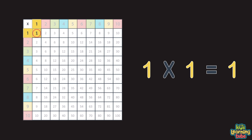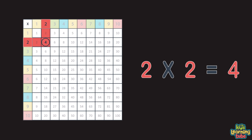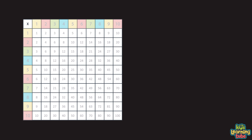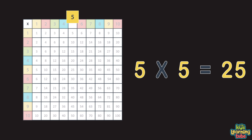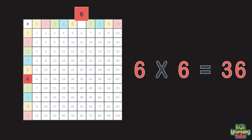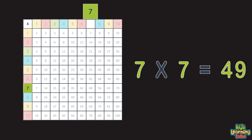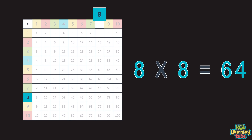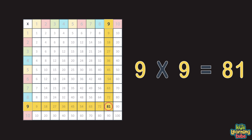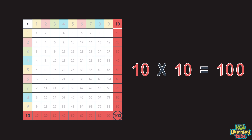1 times 1 equals 1. 2 times 2 equals 4. 3 times 3 equals 9. 4 times 4 is 16. 5 times 5 is 25. 6 times 6 is 36. 7 times 7 is 49. 8 times 8 is 64. 9 times 9 equals 81. And 10 times 10 equals 100, you can see here in red.